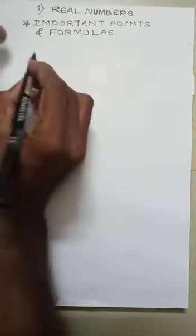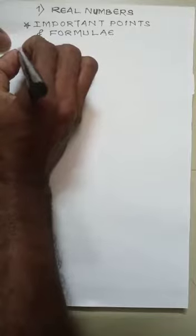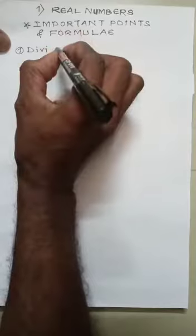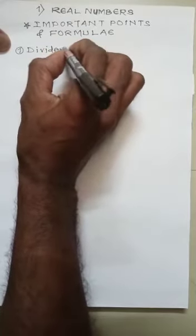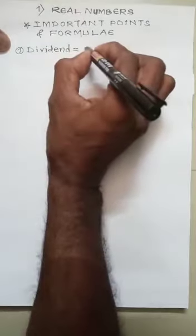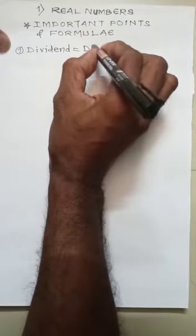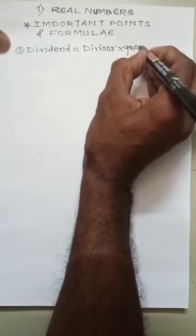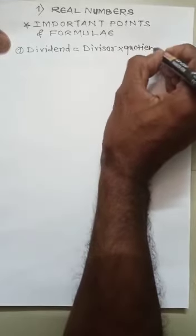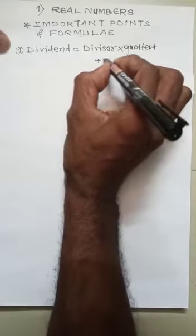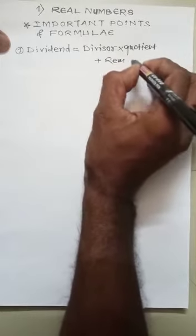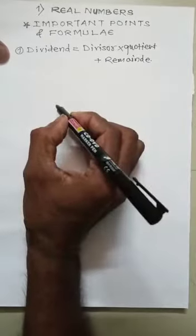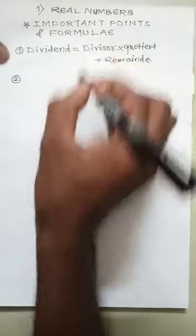Now first formula: Dividend equals divisor times quotient plus remainder. This is the first formula, an important formula for real numbers.